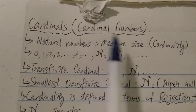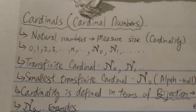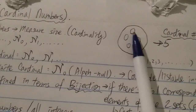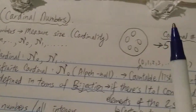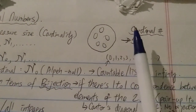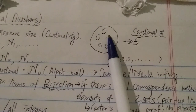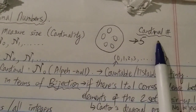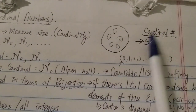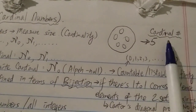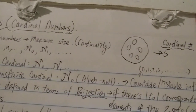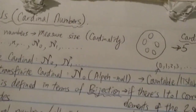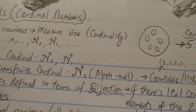Cardinals are the measure of size. So for example, if there's a bag and you have five items inside, then the cardinal number of this will be five. If there's a googol number of things in there, then the cardinal number would be a googol. It's just the measurement of size — not to be confused with ordinals. Ordinals are not a measurement of size; ordinals are ordering.